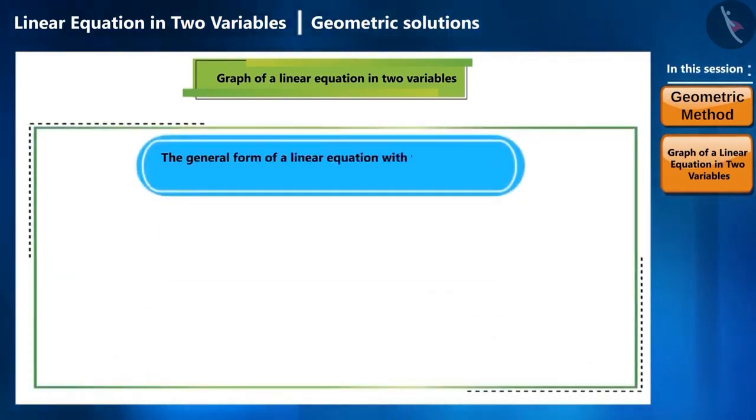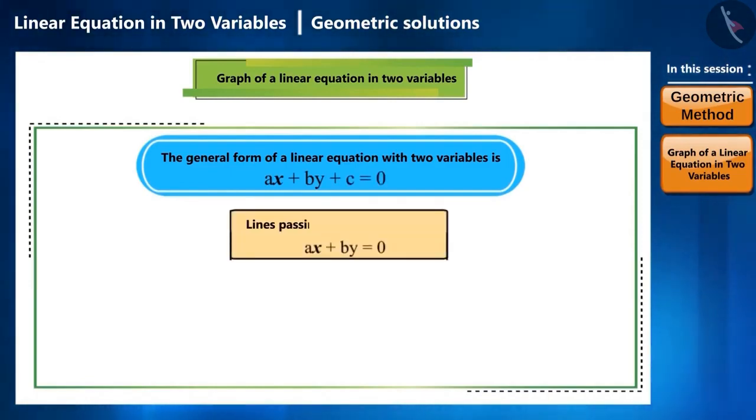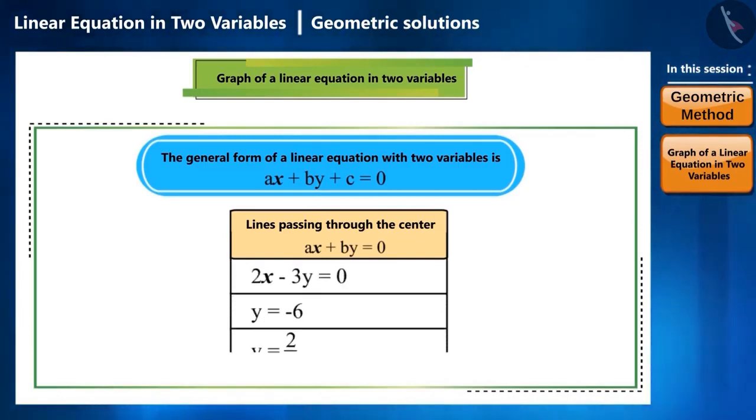The general form of a linear equation with two variables is ax plus by plus c is equal to 0. In this general form, if c is equal to 0, then the line will pass through the centre. That is, it will be the normal form of a line passing through the centre.